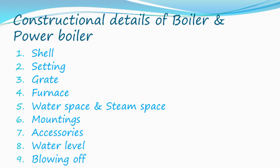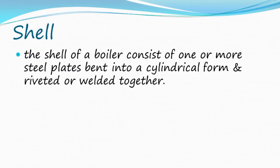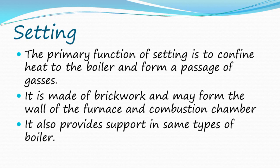Constructional details of a boiler include: shell, setting, grate, furnace, water space, steam space, mountings, accessories, water level, and blowing off. The shell consists of one or more steel plates bent into a cylindrical form and riveted or welded together. The setting's primary function is to confine heat to the boiler and form a passage for gases; it is made of brickwork and may form the walls of the furnace and combustion chamber, and also provides support in some types of boiler.